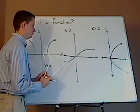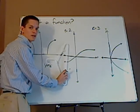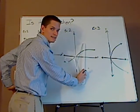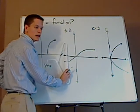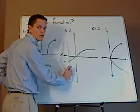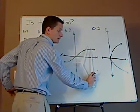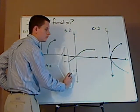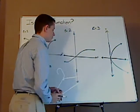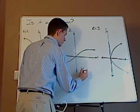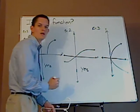What about this guy? If I pass the vertical line through, does it intersect the line in one or more spots of that vertical line? And the answer is no. So it would be a function.